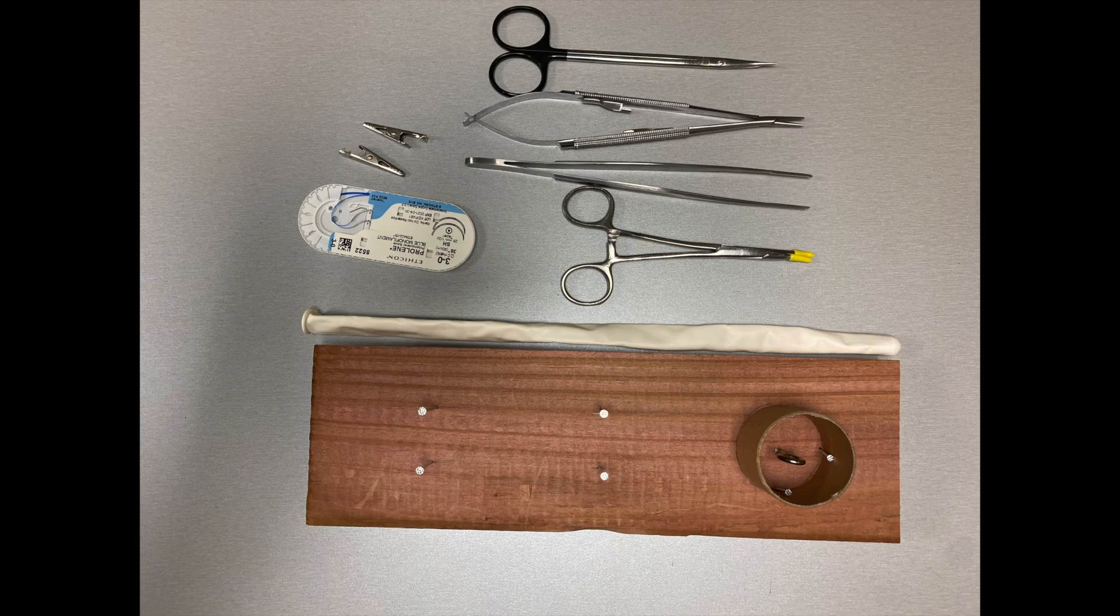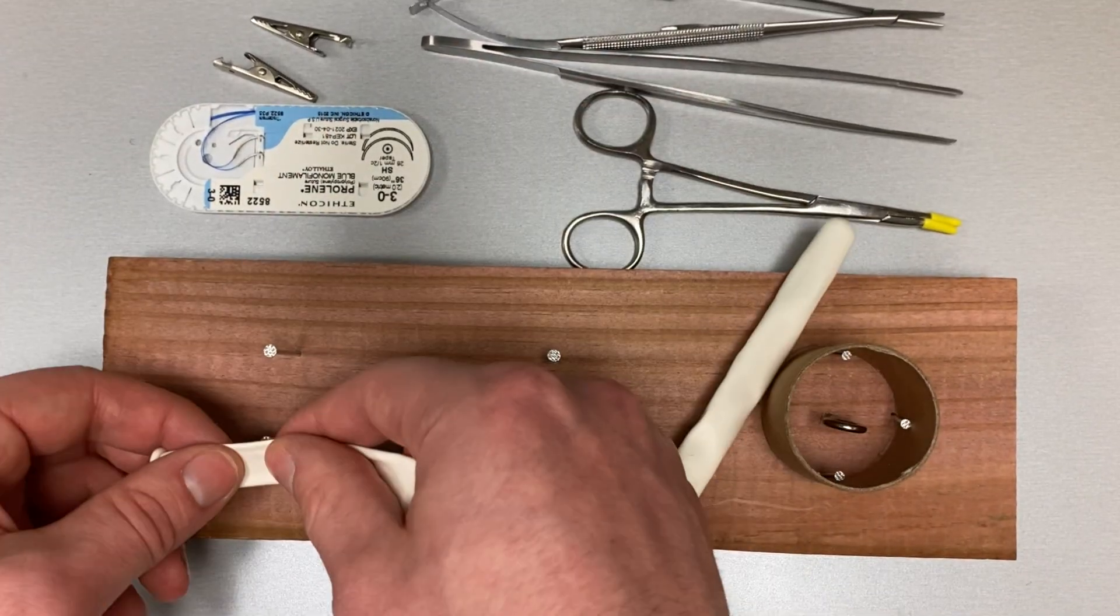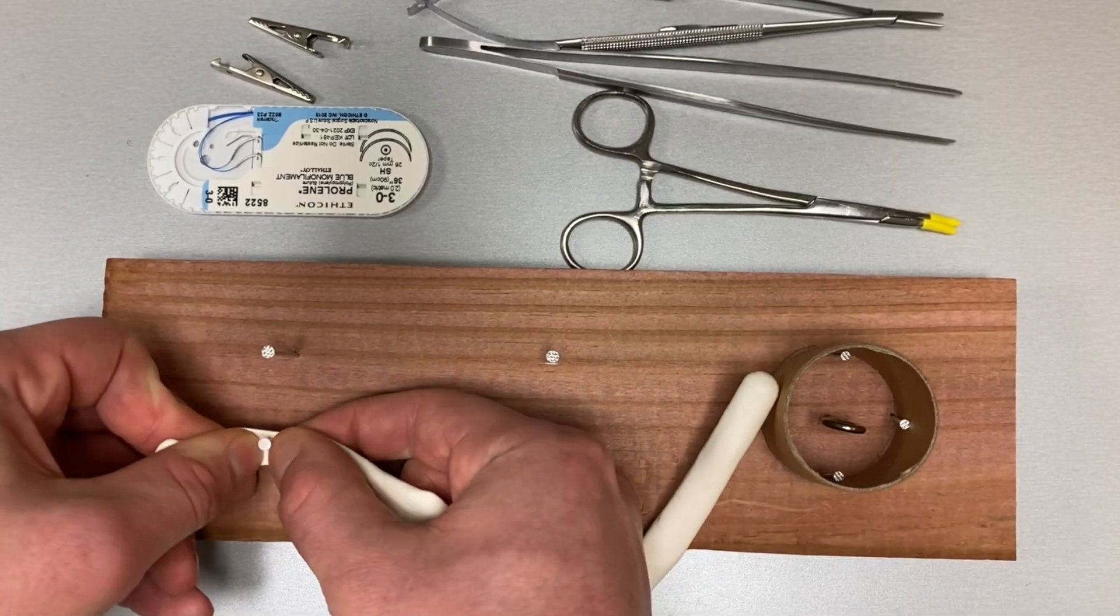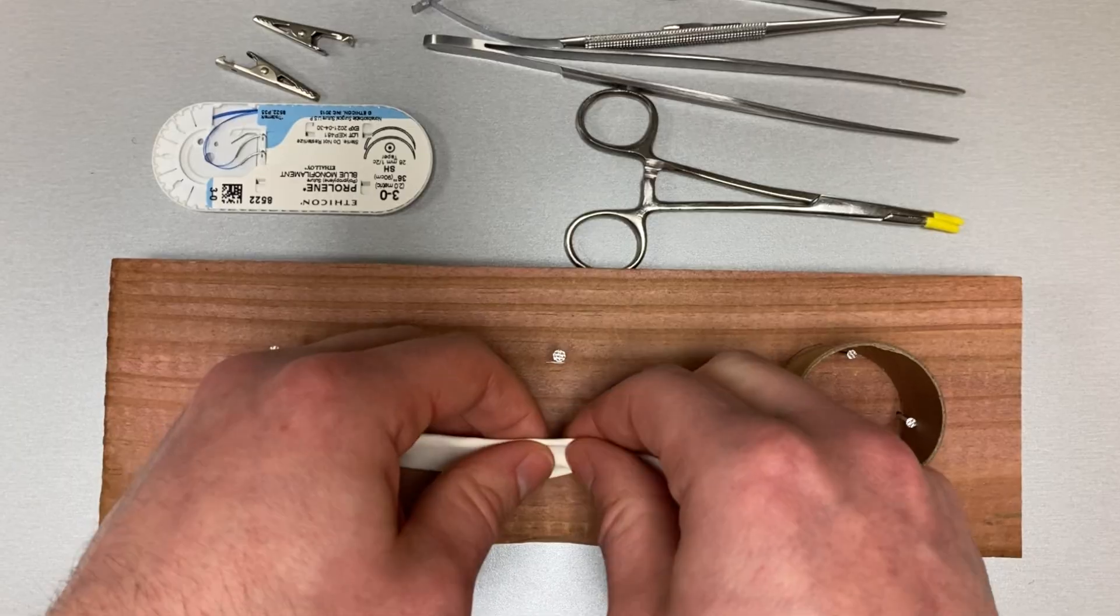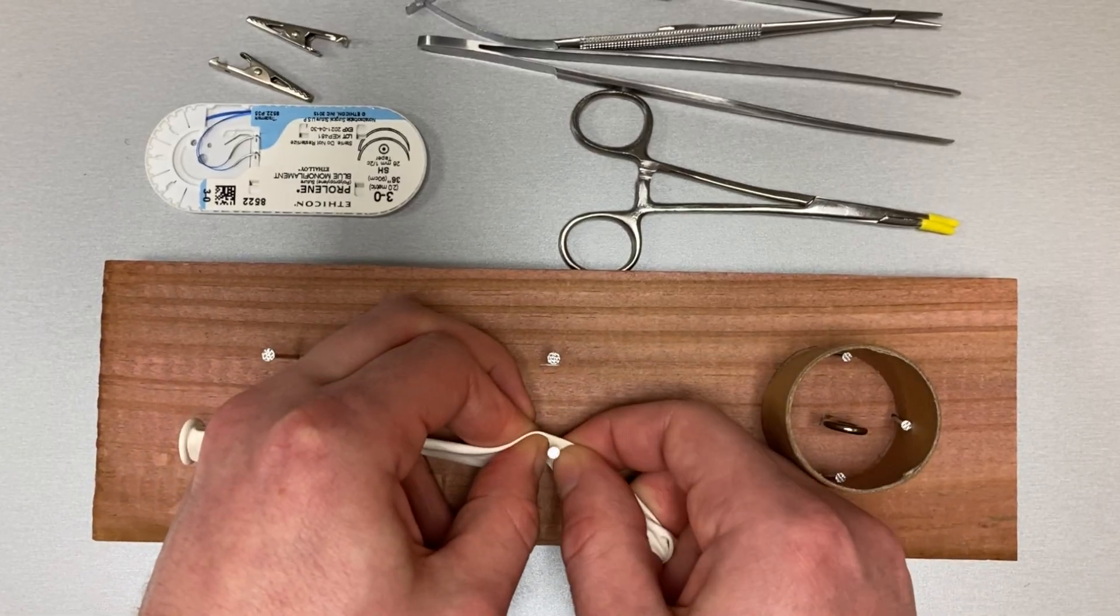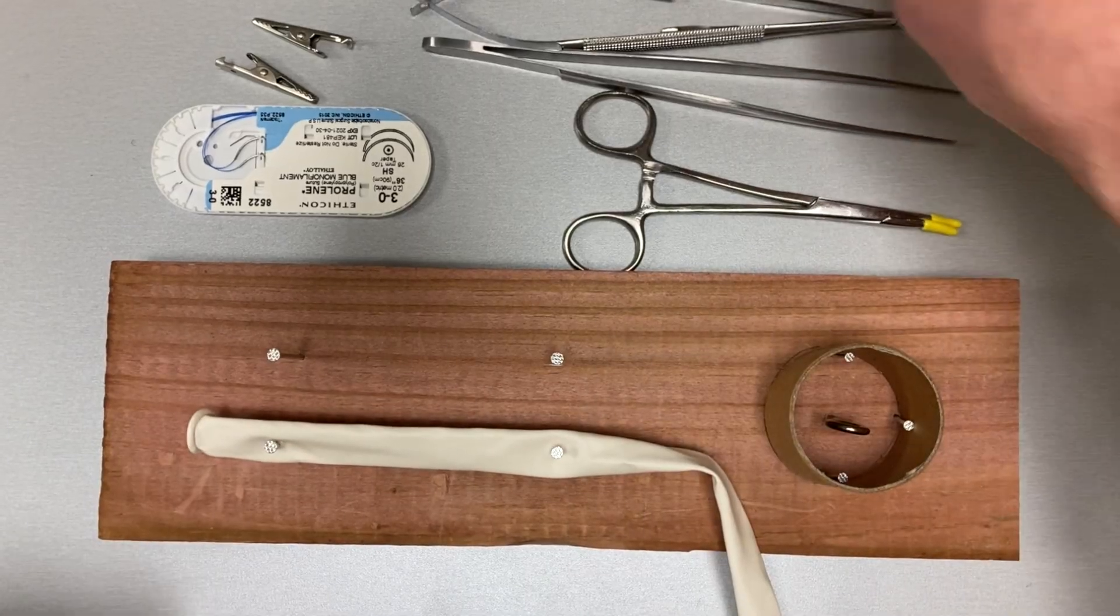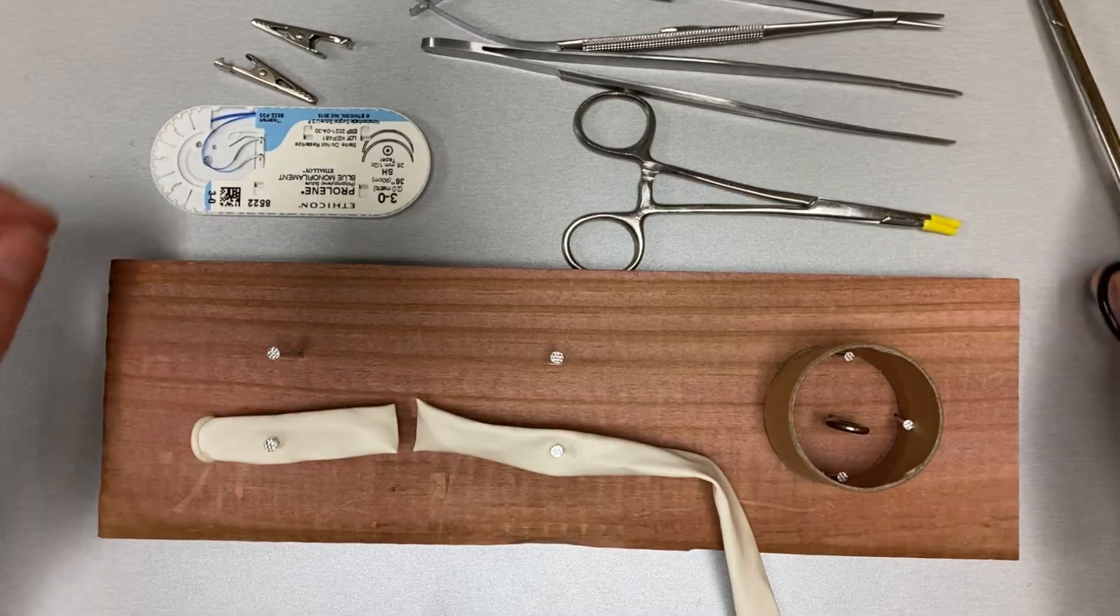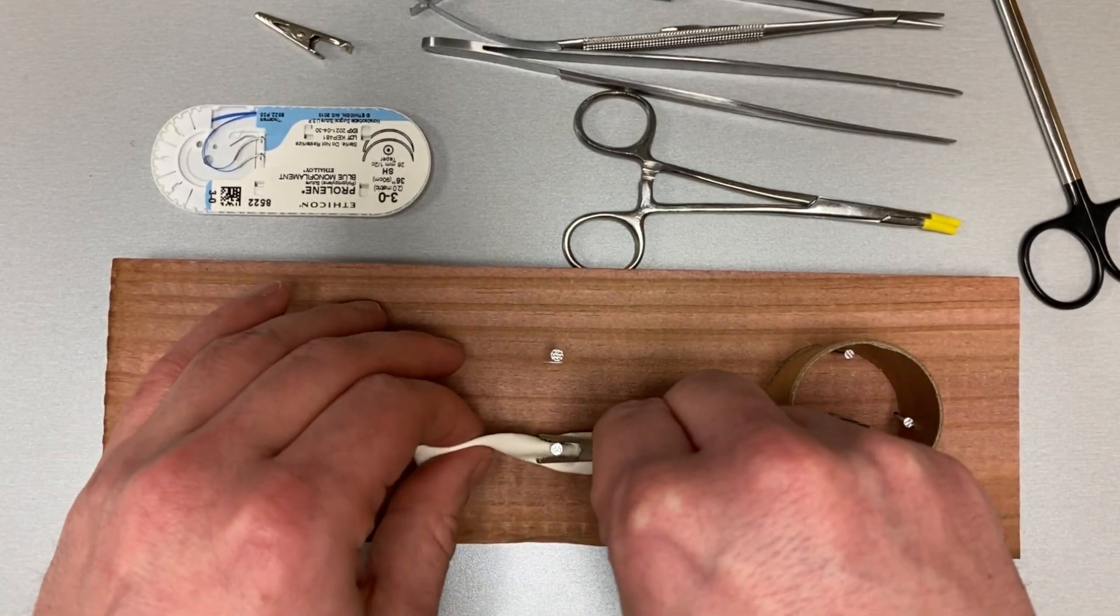Here are the materials required for the end-to-end vascular anastomosis module. First, place the linear balloon on the nails. Use your scissors to cut the balloon in the middle, then use the alligator clips to secure the balloon.